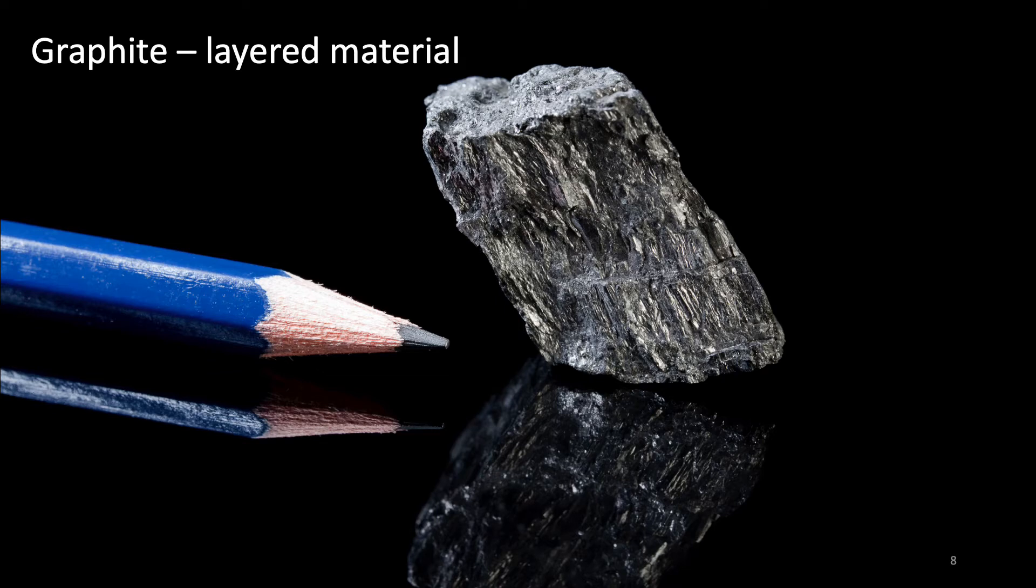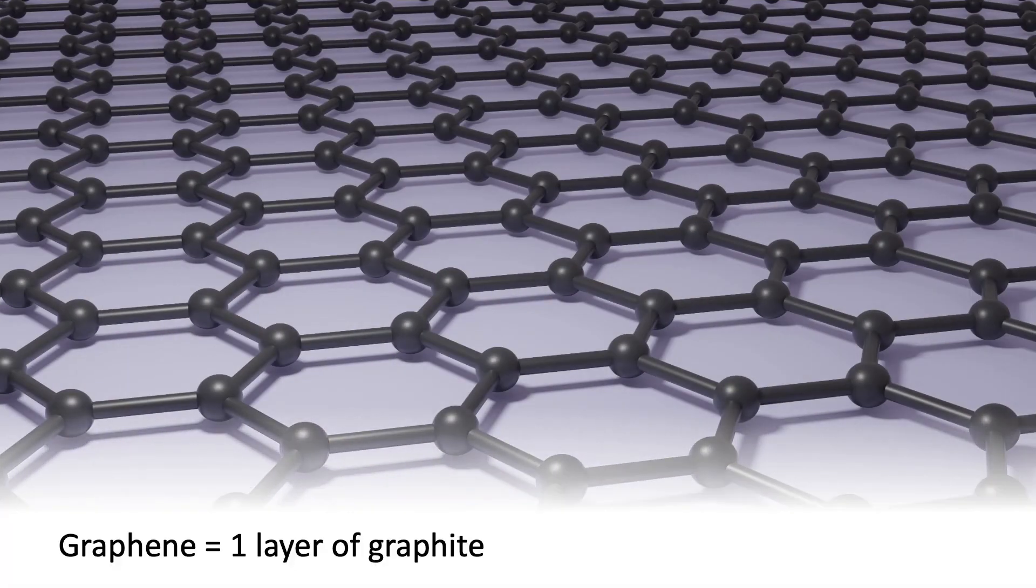Two-dimensional materials are also called layered materials because they consist of individual layers that are weakly connected to each other. This means that these single layers can be peeled away from a big piece of material and studied separately. An example of such a layered material is graphite, which is used as a writing material in common pencils. A single isolated layer of graphite is called graphene and it looks like this. It is made of carbon atoms arranged in a hexagonal lattice. This was the first 2D material obtained and studied experimentally.